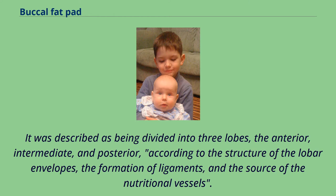It was described as being divided into three lobes — the anterior, intermediate, and posterior — according to the structure of the lobar envelopes, the formation of ligaments, and the source of the nutritional vessels.